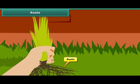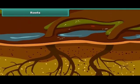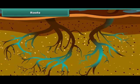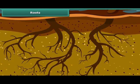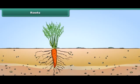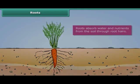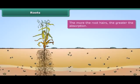All plants have roots. Roots play a crucial role in providing water and nutrients to the other parts of the plant body. Roots have hairs, and they absorb water and nutrients from the soil through these hairs. The more root hairs a plant has, the greater the absorption.